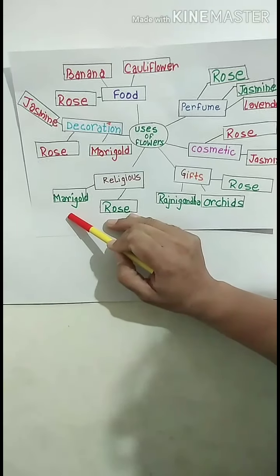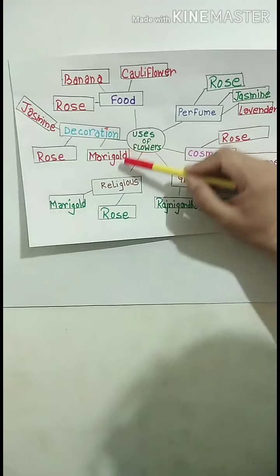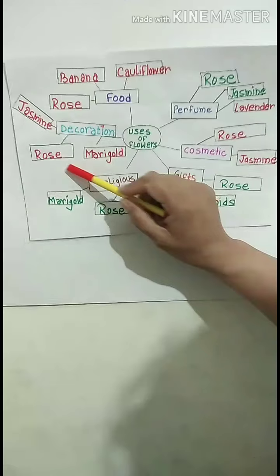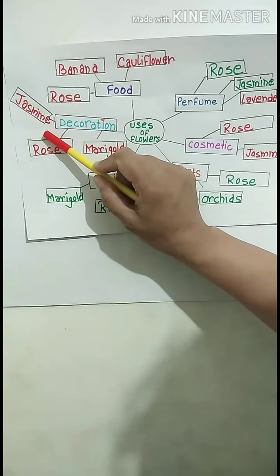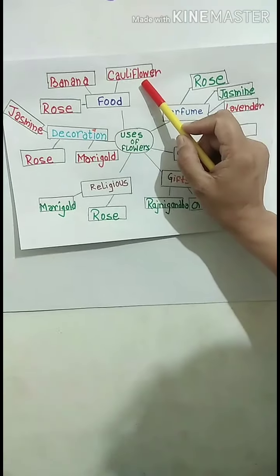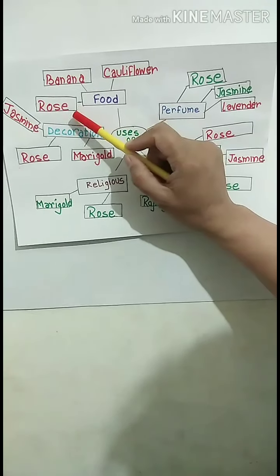For religious ceremonies we use rose and marigold. For decoration we use marigold, rose and jasmine and as food we use cauliflower, banana, rose and broccoli too.